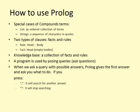Compound terms have two special cases. A list is an ordered collection of terms. Strings are a sequence of characters in codes.